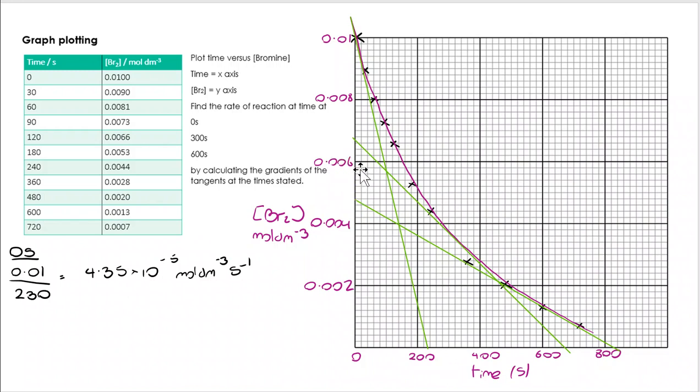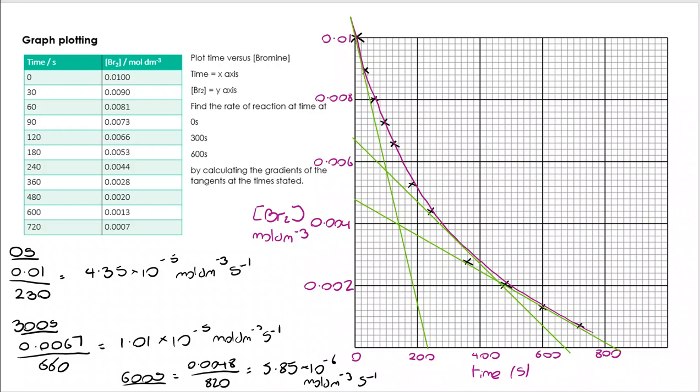At 300, you can see that it's going up to 0.067, going across here, following my scale. And down here, if I go from 0 to 660, that gives me a rate of reaction of 1.01 by 10 to the minus 5 moles per decimetre cubed per second. And I do the same again at 600 seconds. And I find that my concentration is 5.85 by 10 to the minus 6 moles per decimetre cubed per second.